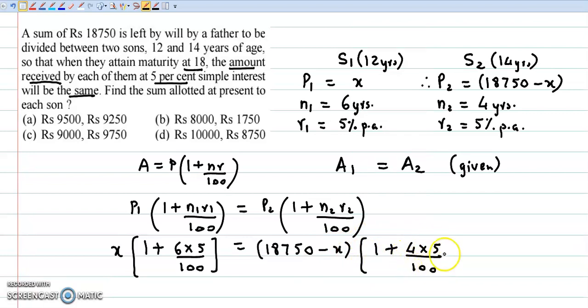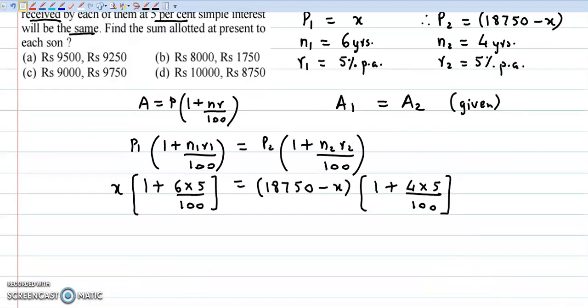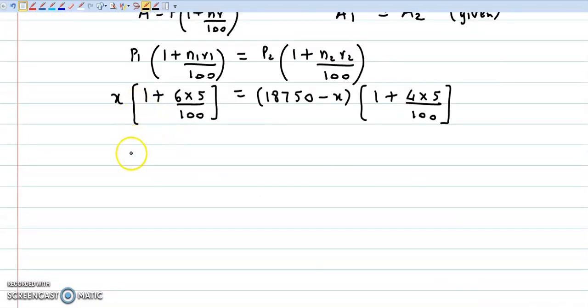So let us simplify this equation. From here we get x into, now 6 times 5 is 30, 30 divided by 100 is 0.3 plus 1, so basically this becomes 1.3. This becomes 18,750 minus x, into 4 times 5 is 20, 20 divided by 100 is 0.2 plus 1, this becomes 1.2. So we have 1.3x equals 18,750 minus x into 1.2.